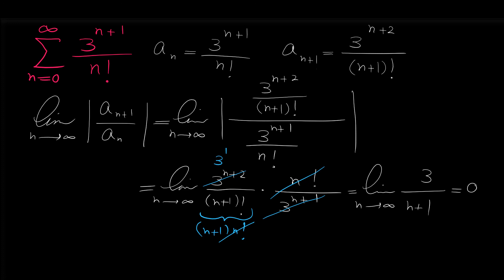As n approaches infinity, 3 over n plus one goes to zero, since the numerator is a constant and the denominator grows without bound. Because this limit is zero, and zero is less than one, by the ratio test the given series is convergent.